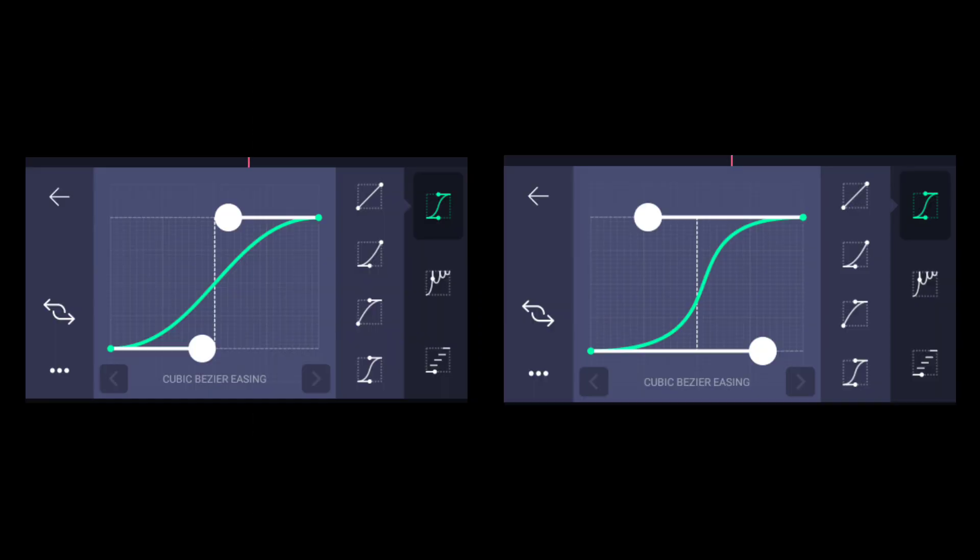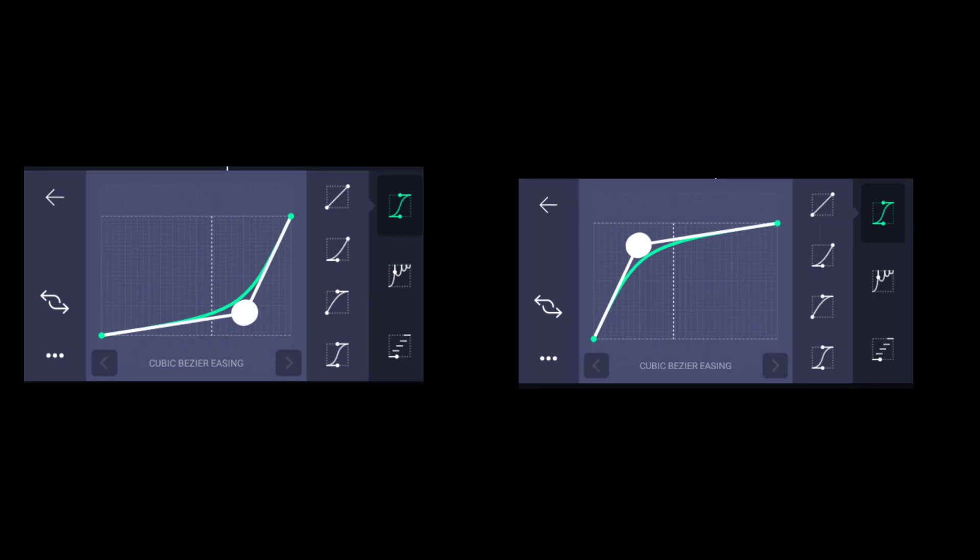These are just some of the variations of the graph. This graph is also one of the basic graphs in Alight Motion. It's great and it's also quite popular, but we rarely use this graph.